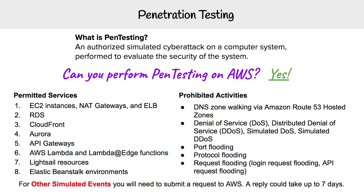You also have AWS Lambda and Lambda Edge, you have Lightsail resources — which use a variety of services underneath such as EC2 — and then you have Elastic Beanstalk. So those are the eight permitted services.